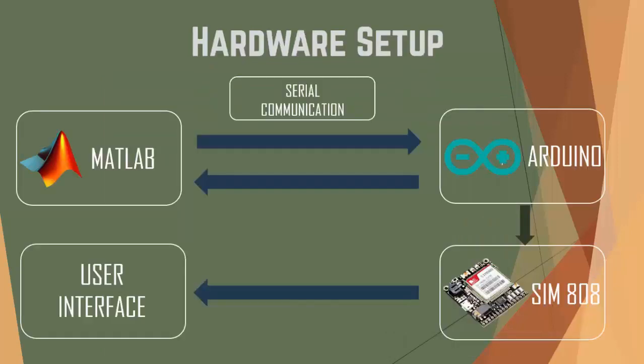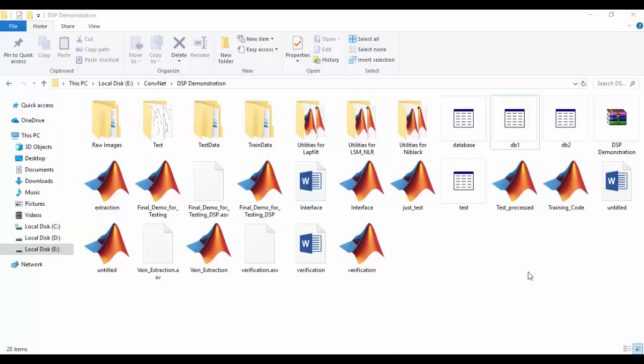Finally, the hardware setup: if the vein pattern of the user is verified, then they can access their account using a one-time password, which is generated by Arduino and delivered to the corresponding mobile number of the account using GSM. Arduino also sends the same password to MATLAB using serial communication for matching of the given password in the graphical user interface.